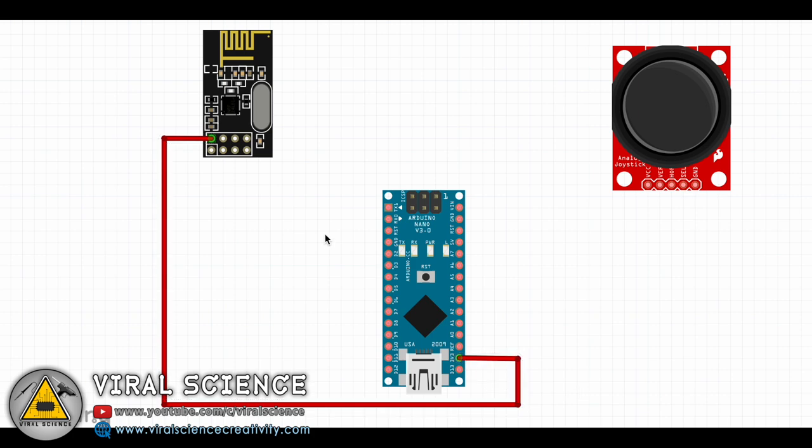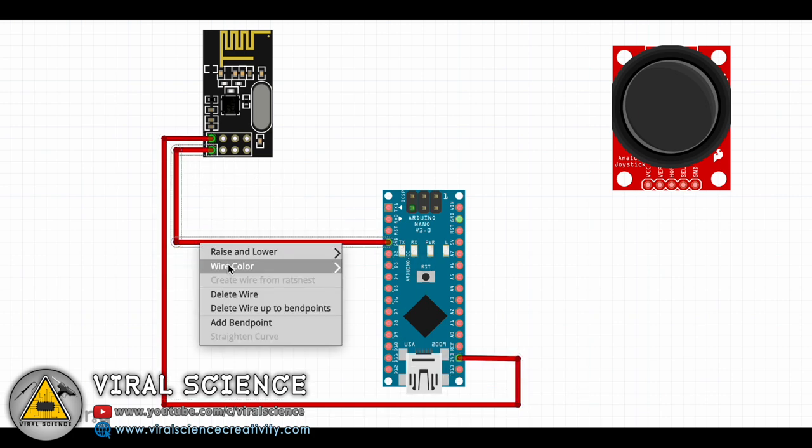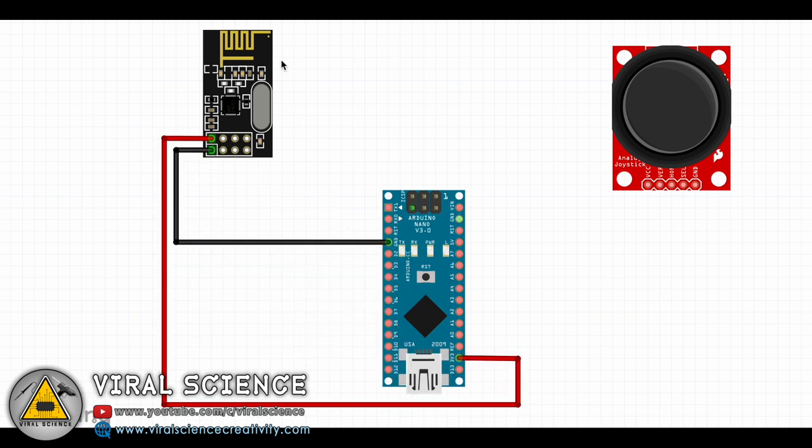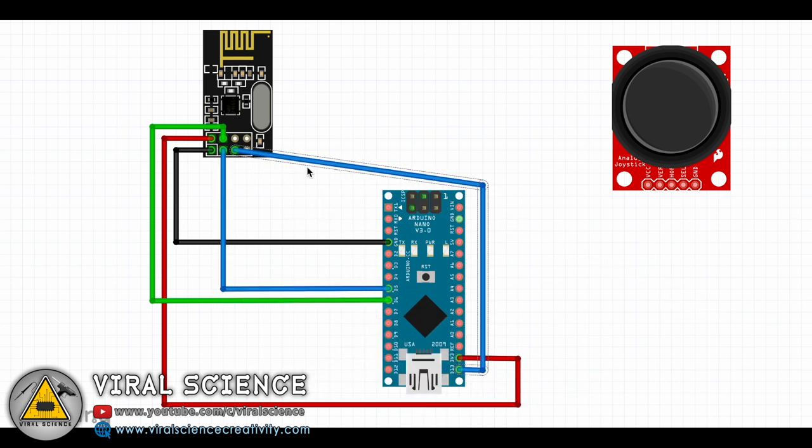So first we'll do the connection of our joystick transmitter. In my case I'll be using the joystick controller which I made in the previous video. But if you don't have the joystick controller then you can follow this circuit diagram and do the connections on the breadboard itself.